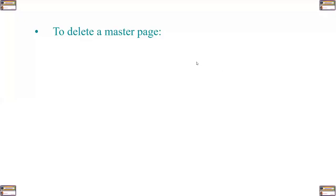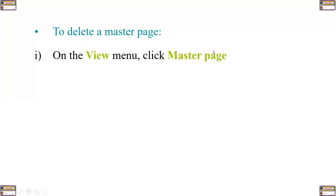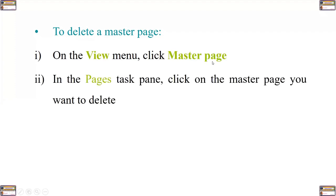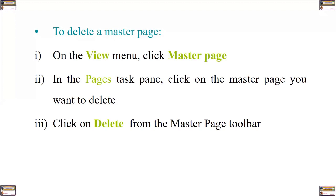How do you delete a master page? If you are done with using your master page or master pages, you can always delete them. To delete a master page, click on the View menu and select Master Page. Then in the Pages task pane, click on the master page you want to delete and then click on Delete from the master page toolbar. If an alert is generated in the alert box, click Yes.